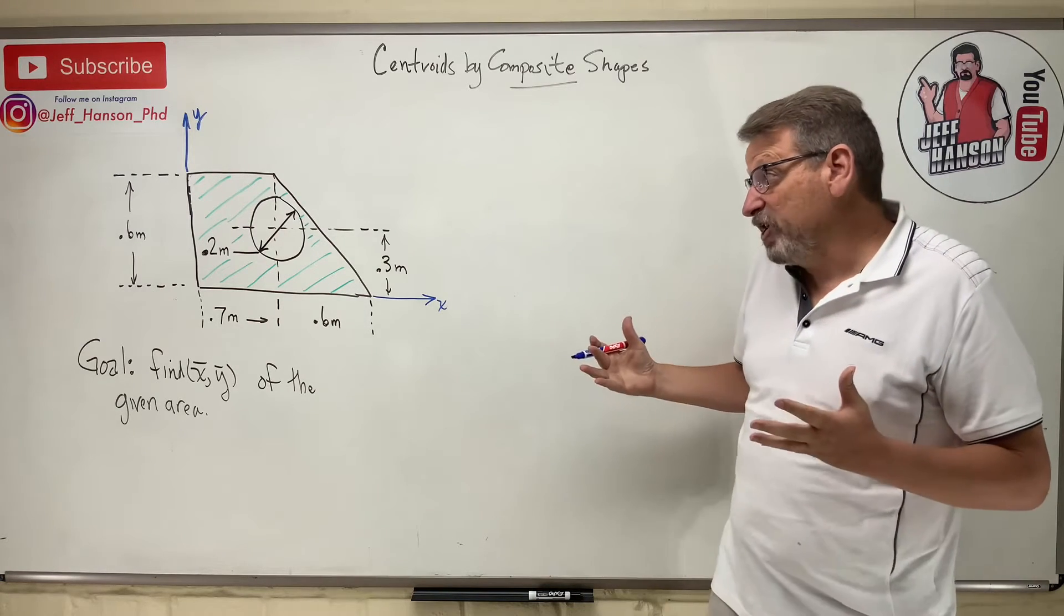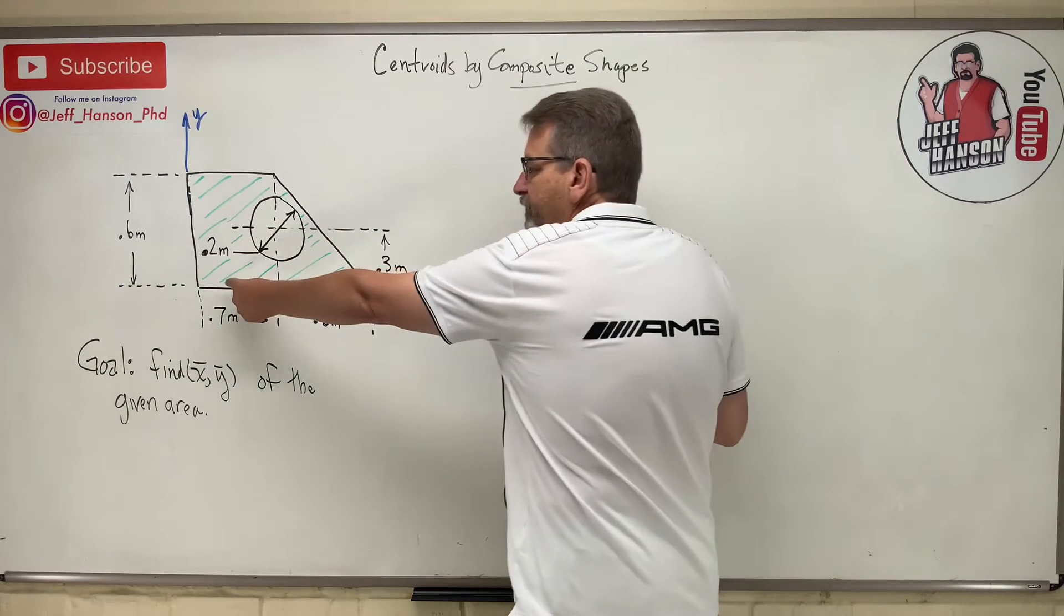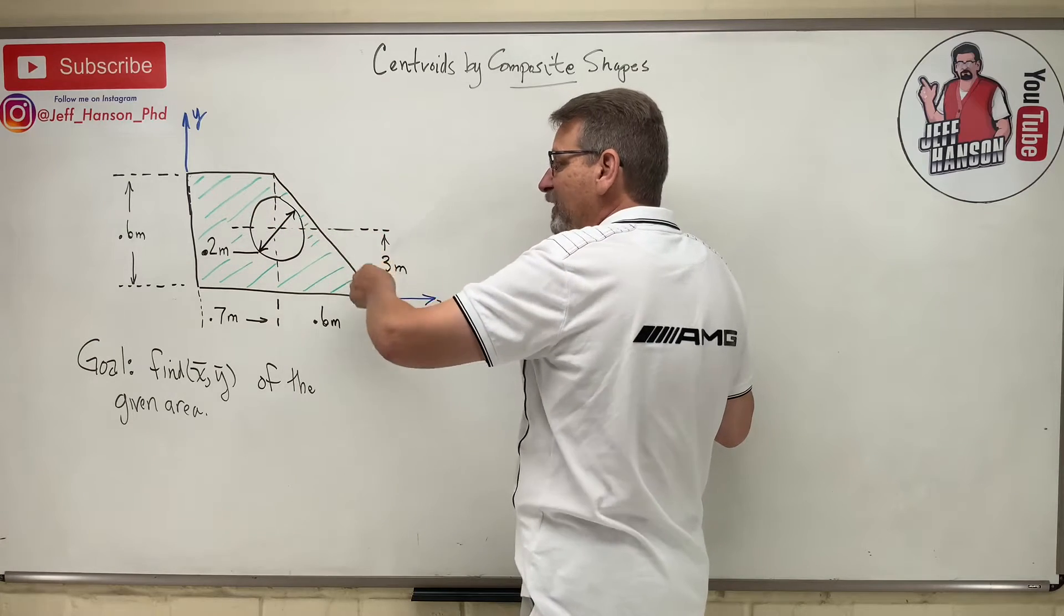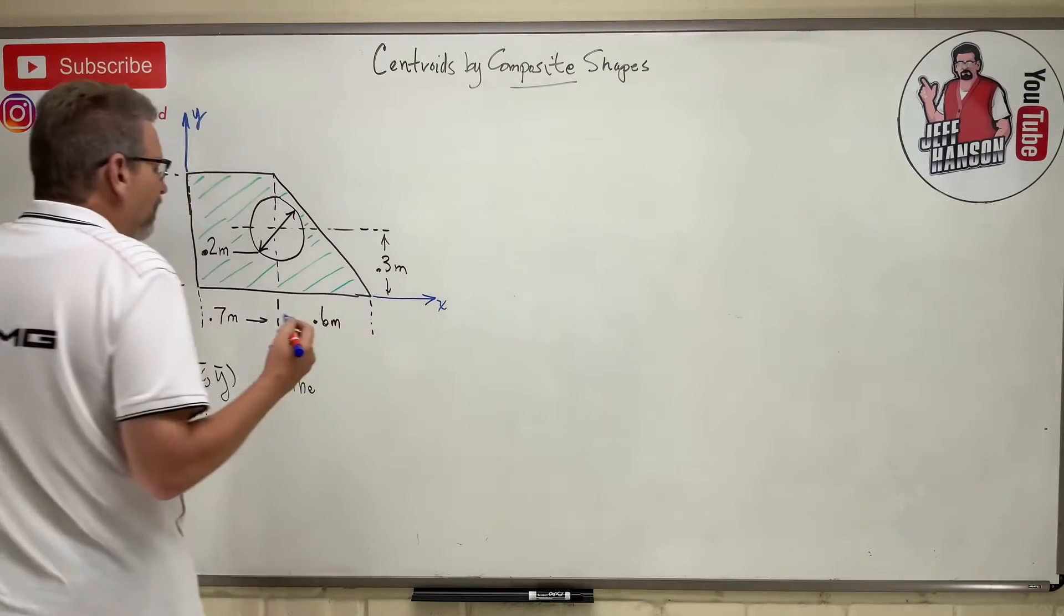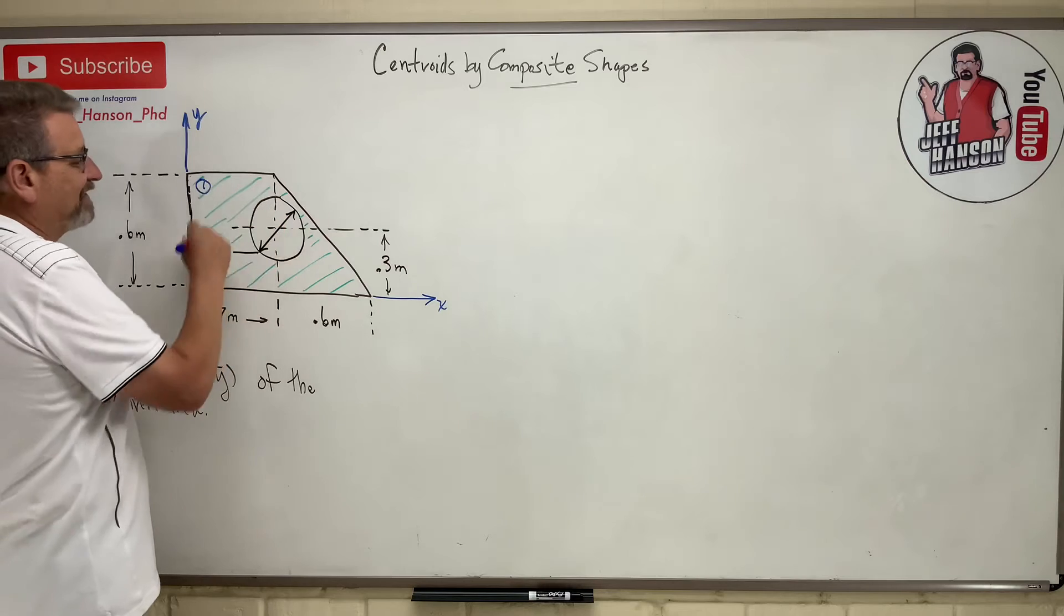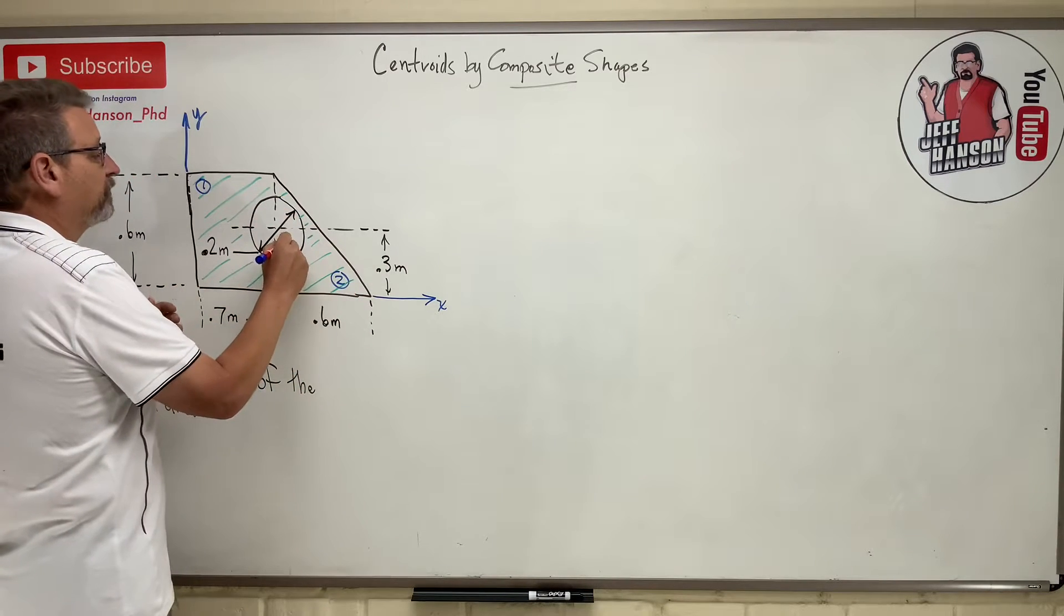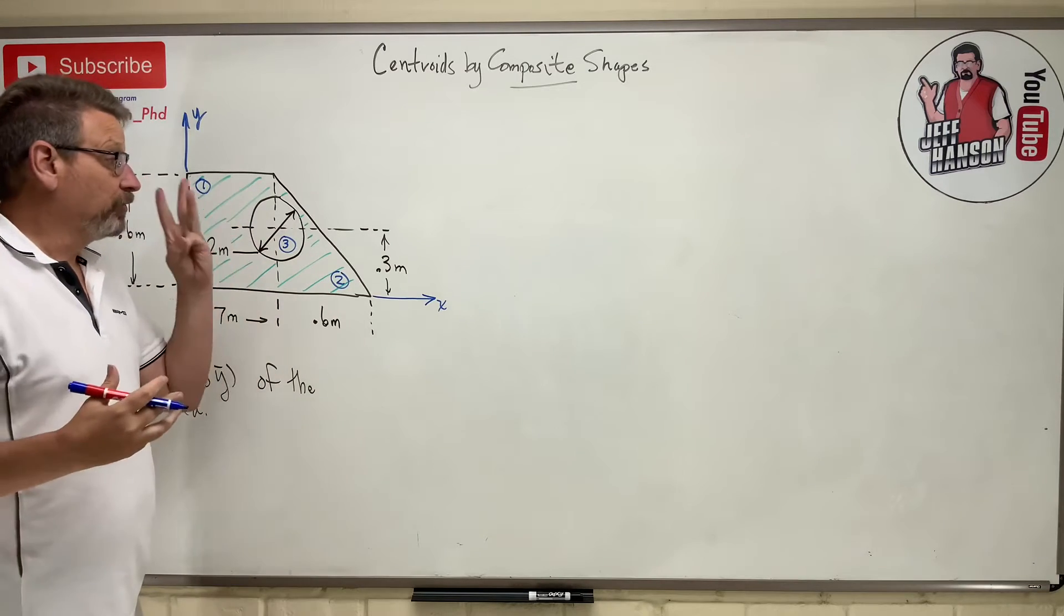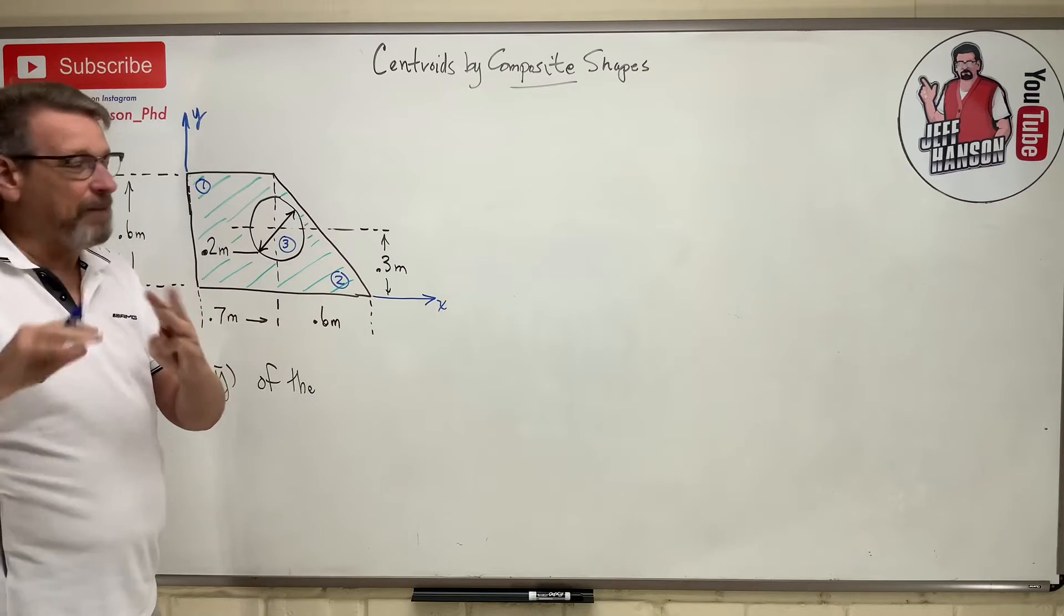How do you break it into parts? Well, it's up to you. Here's our origin over here at this corner. You could do one big rectangle and subtract away that triangle, but I don't know that saves you anything versus just saying I've got number one a rectangle, number two I've got a triangle, and number three I'm gonna subtract away that circle. So three shapes.